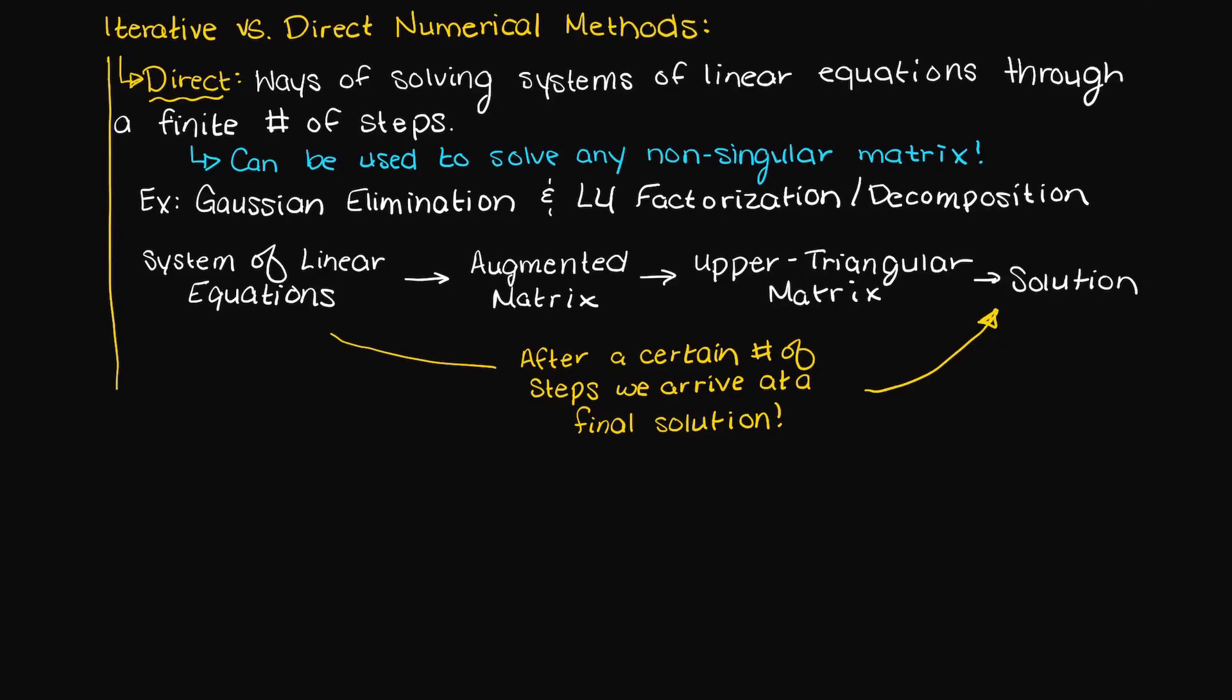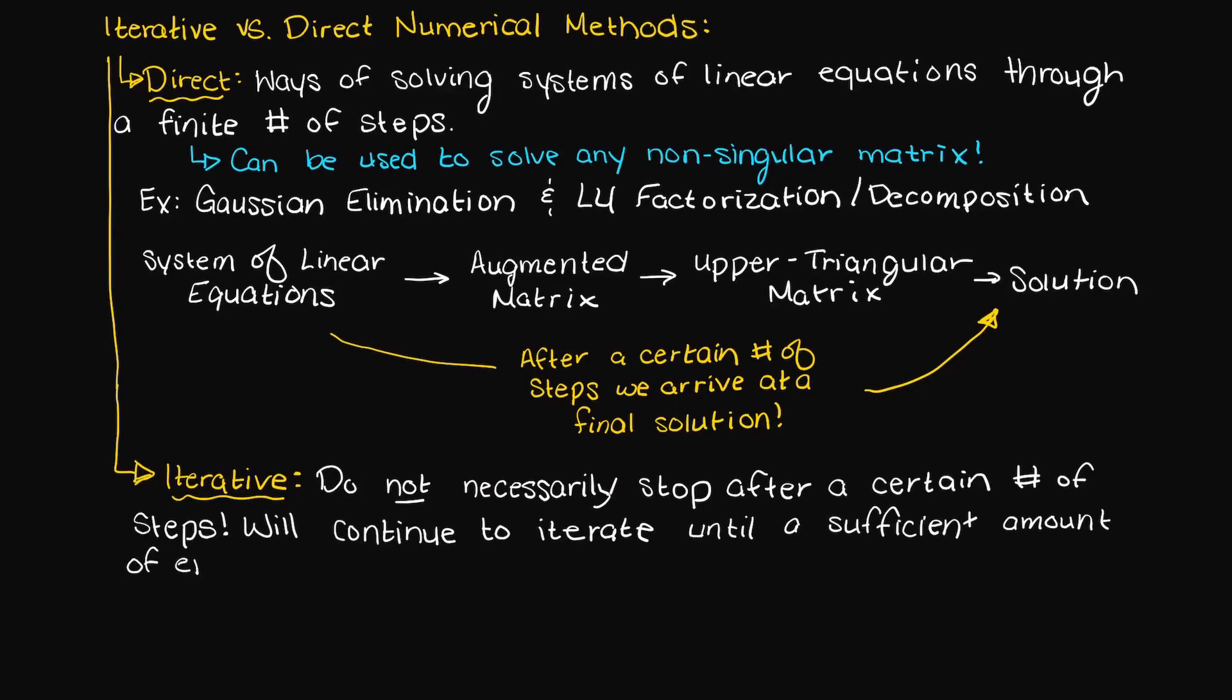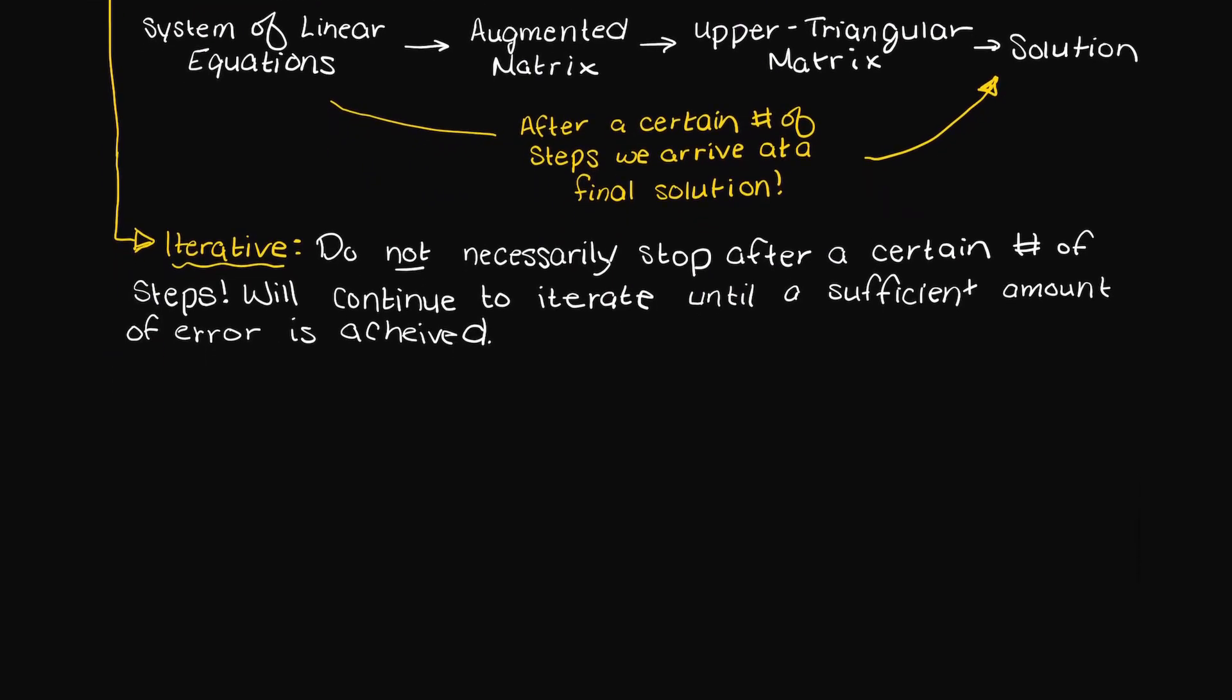Iterative numerical methods are different than direct numerical methods in that they do not necessarily stop after a certain number of steps. They will continue to iterate, which means to do again or repeat with a better guess, until we get a sufficient amount of error.